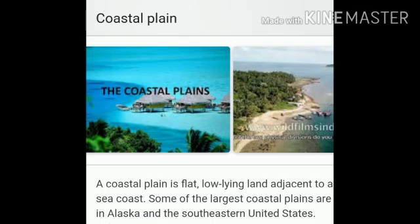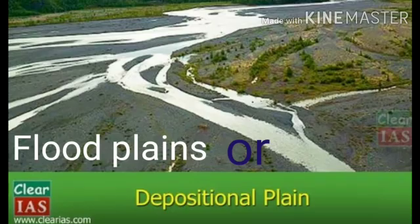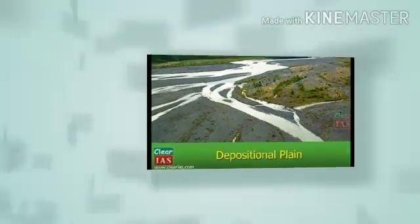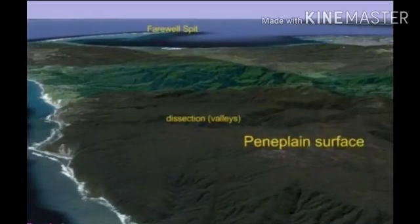Next are flood plains. Flood plains are found near or along the banks of rivers because they get deposited by minerals or alluvium brought by the rivers.